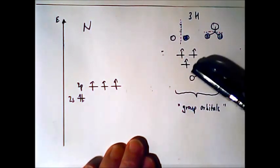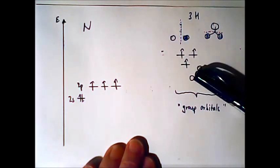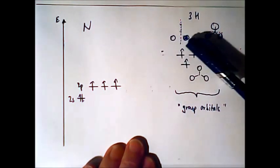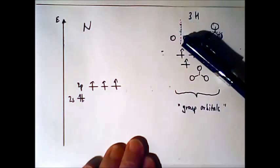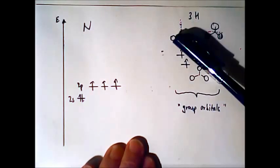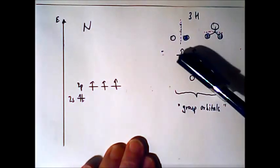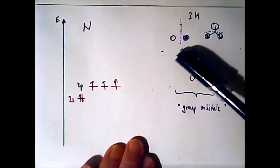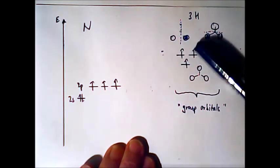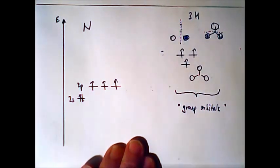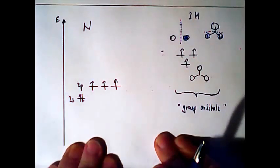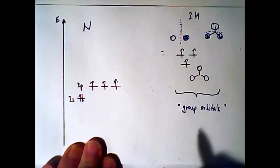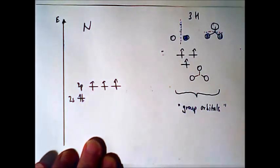Important fact is the three 1s orbitals combine together to three group orbitals. One combination, all 1s orbitals in phase. The other combination, we have one node, one change in the phase, plus and minus. And there we can have two possibilities. And we get three orbitals and three electrons. Now how do these group orbitals interact with the nitrogen orbitals?